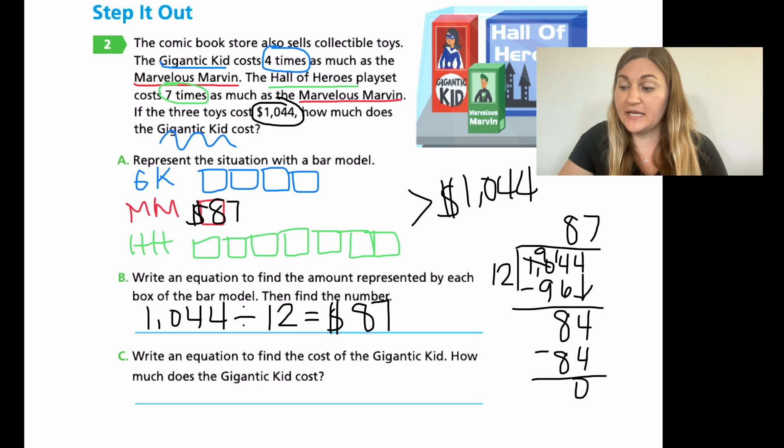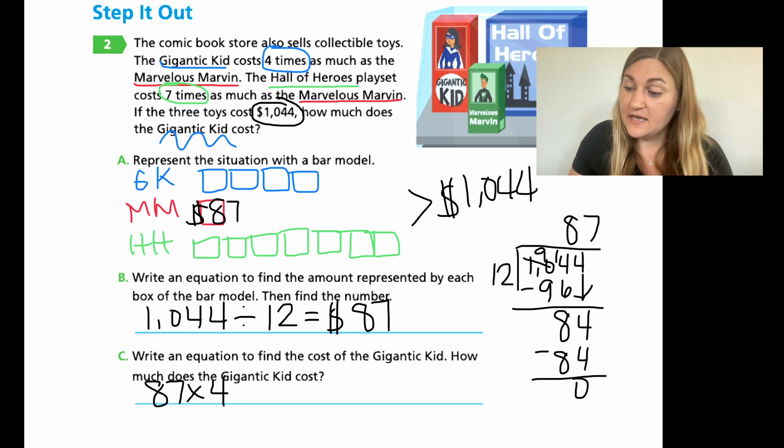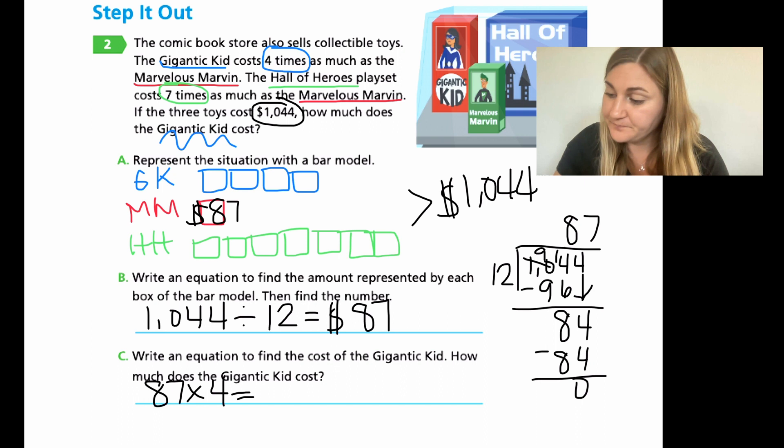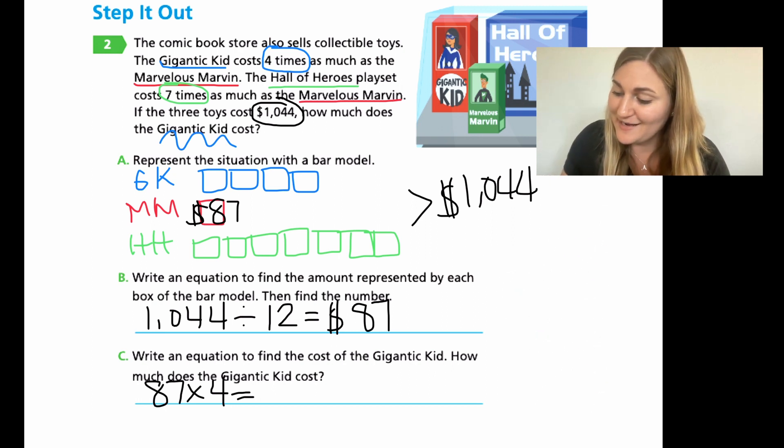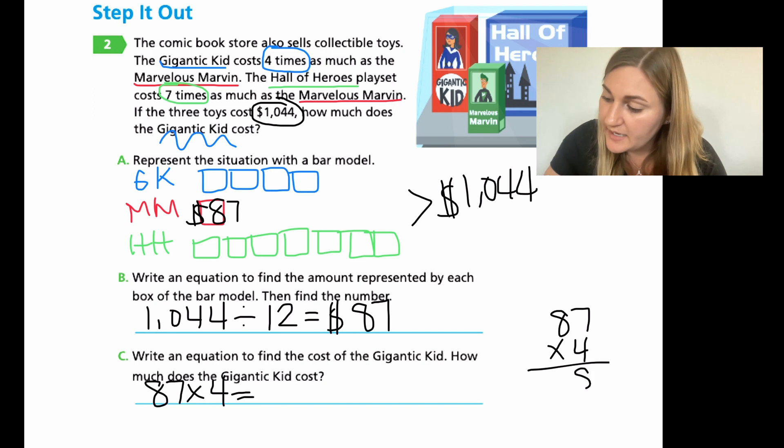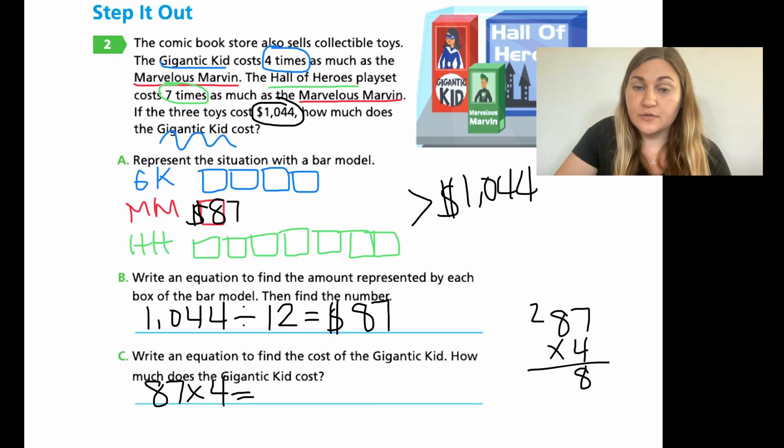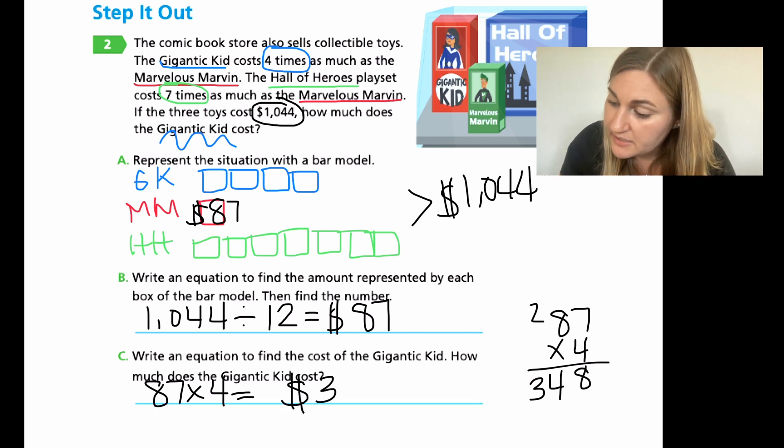Write an equation to find the cost of the gigantic kid. So if I know that each box is worth 87, I'm going to start with my 87 and the gigantic kid up in blue was worth four boxes. I know that I have 87 for each box times four because I have four boxes. So there's my equation. And then how much does it cost? Well, we need to multiply to find out. So 87 times four, when I multiply it together, seven times four is 28. Carry the two, eight times four is 32 plus two more is 34. So the gigantic kid costs $348.